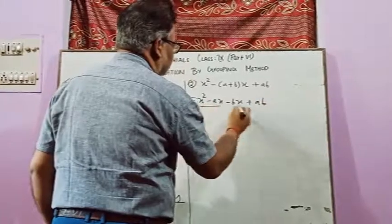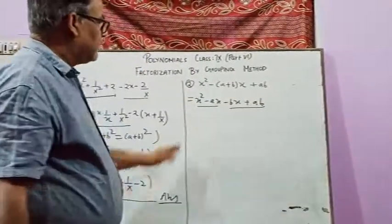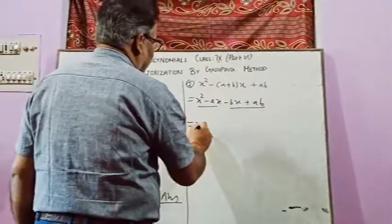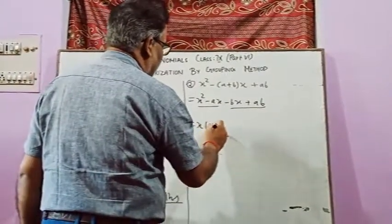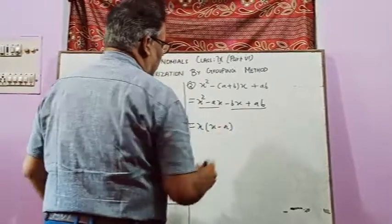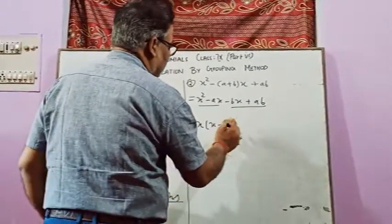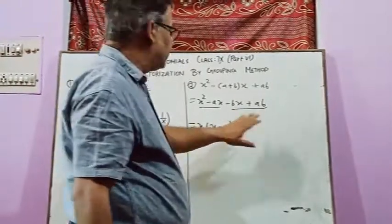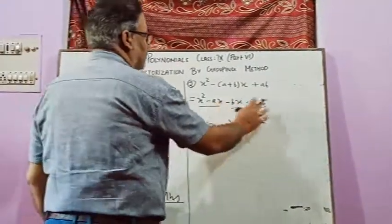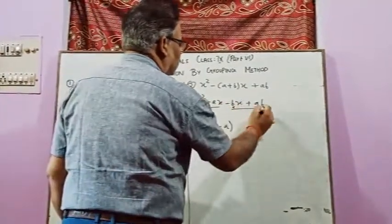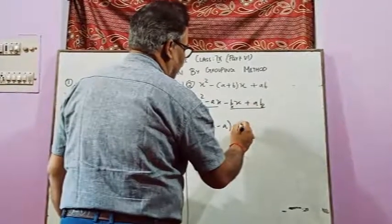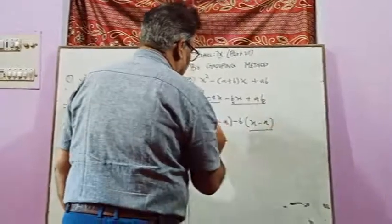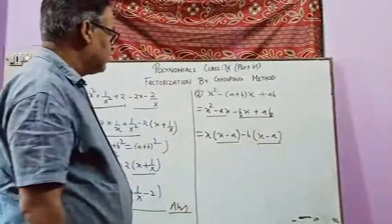We'll do two parts. This is x squared minus ax. From this we can take x common. This is x minus a. If you have x minus a, from here we can take minus b common. So this is minus b and x minus a.